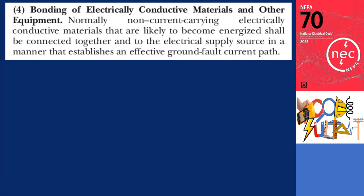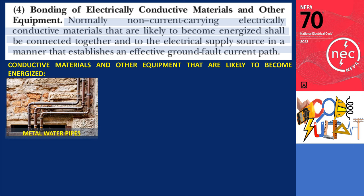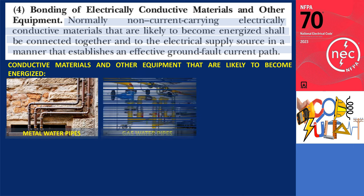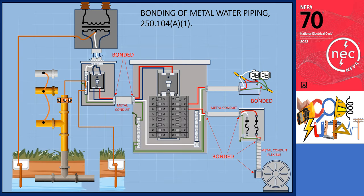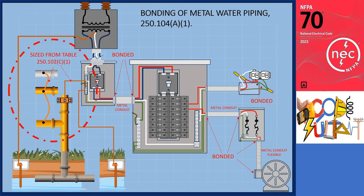Section 250.4A4 — Bonding of Electrically Conductive Materials and Other Equipment — states that normally non-current carrying electrically conductive materials likely to become energized shall be connected to the electrical supply source to establish an effective ground fault current path. This typically refers to metal water piping, metal gas piping, and exposed structural steel members. Section 250.104 specifies the rules for bonding the building's exposed structural metal, water piping, and other metal piping systems, with bonding jumper sizes per Table 250.102C1.